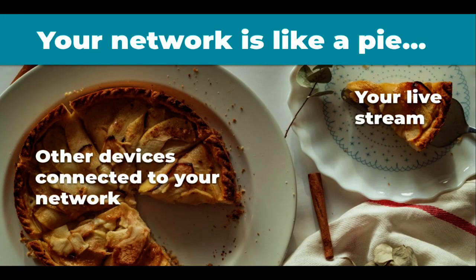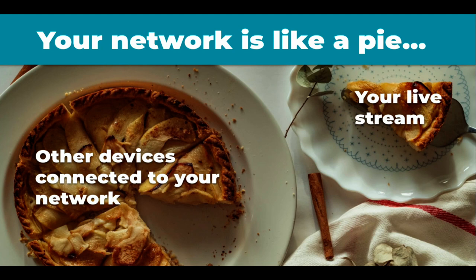Imagine your internal network connections — everything running in your home, church, or business — as a pie. That's exactly what your internet bandwidth is like inside that internal network. All routers and switches take the bandwidth you're allotted and divide it up equally among all connected devices. So regardless of whether you have one device or fifty, each device gets an equal portion of that bandwidth. When you have many devices and limited bandwidth, you're taking away from the biggest piece of pie that should go to your live stream.